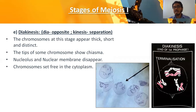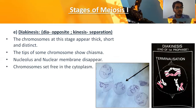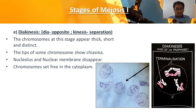The last sub-stage of prophase one is diakinesis — 'dia' refers to opposite, 'kinesis' means separation. At this stage, chromosomes appear thick, shortened, and distinct. The tips of some chromosomes show chiasmata while in others they are separated. In diakinesis, the nucleolus and nuclear membrane completely disappear. From leptotene onwards they had been slowly disintegrating, but in diakinesis they are completely disintegrated, and all chromosomes are set free in the cytoplasm, completing prophase one of meiosis one.